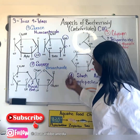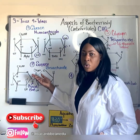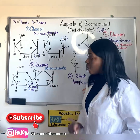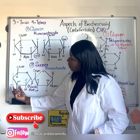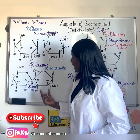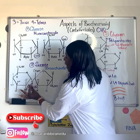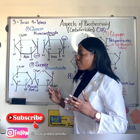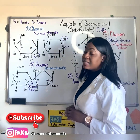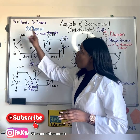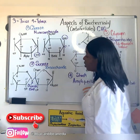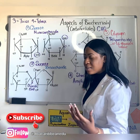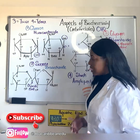Moving on to the disaccharide — here I have sucrose. Recall the disaccharide is made up of two sugar units. For sucrose, I have a glucose unit and a fructose unit joined together by a glycosidic bond. One important thing to note is that sucrose is a non-reducing sugar, unlike glucose which is a reducing sugar. The glycosidic bond formation hinders its favorability for participating in reactions.